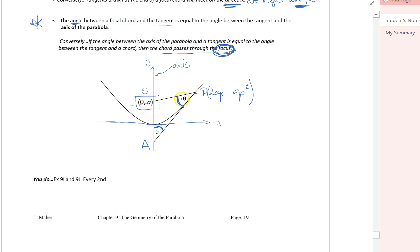To prove that these two angles are equal, we're going to show that in our triangle, we want to show that the triangle SPA is isosceles.